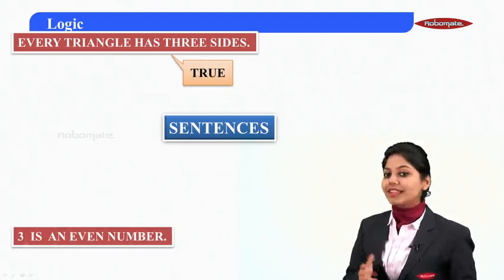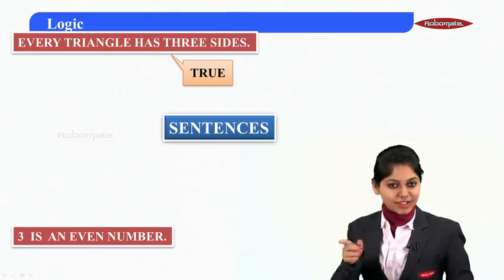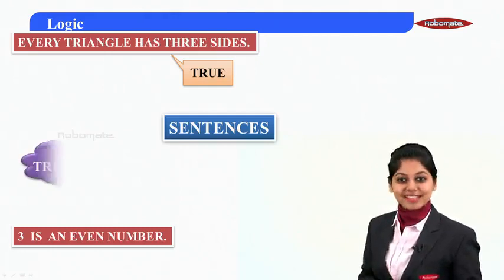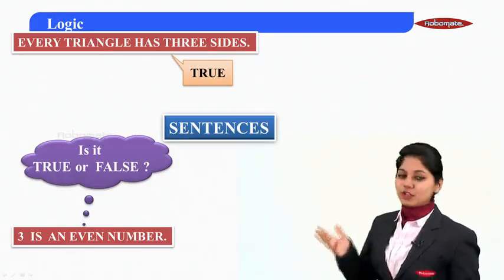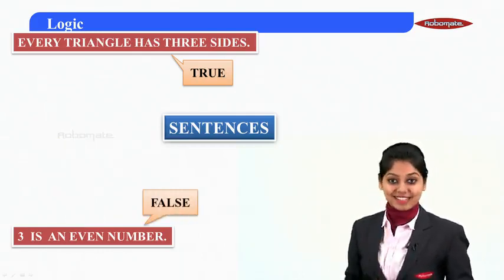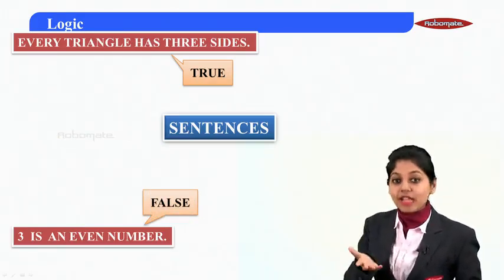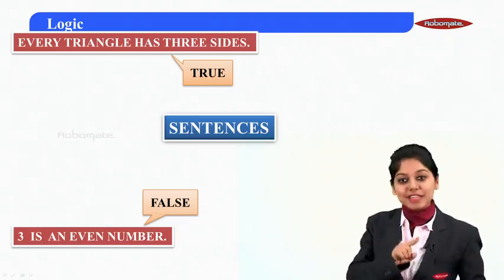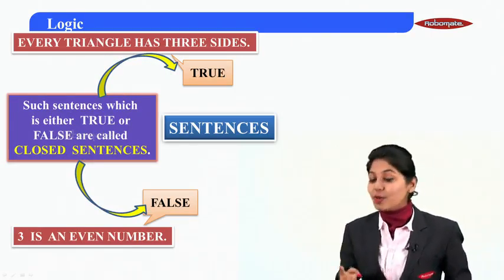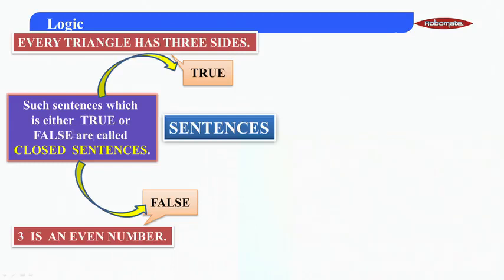Here is another example: three is an even number. Now if I ask you, is it actually an even number? No, it's an odd number. So the given statement is a false sentence. Such sentences which have some truth value — meaning they can either be true or false — are called closed sentences.